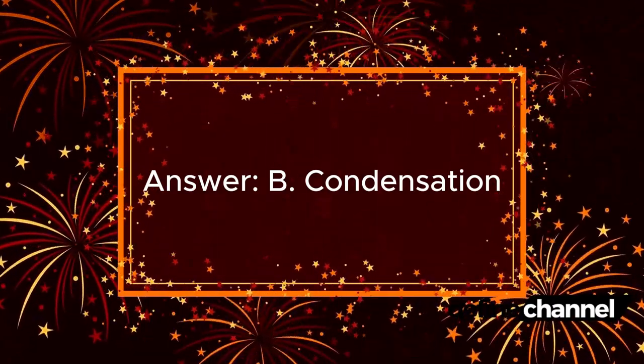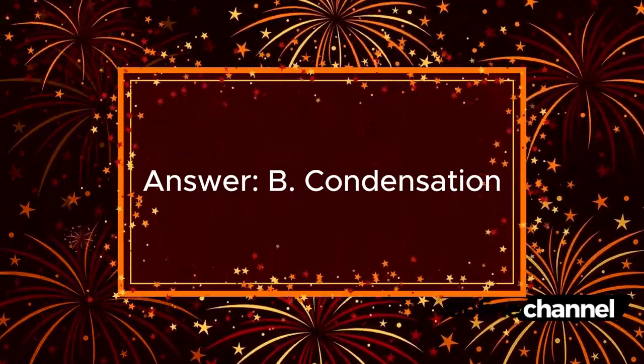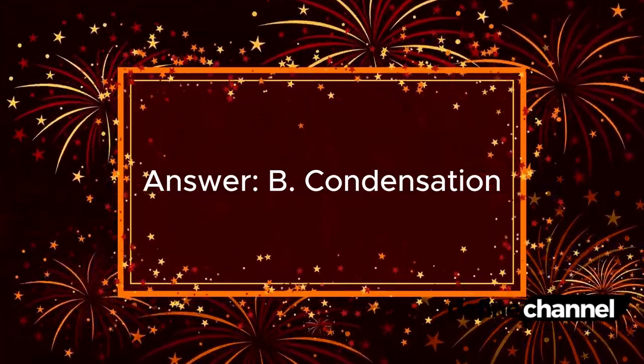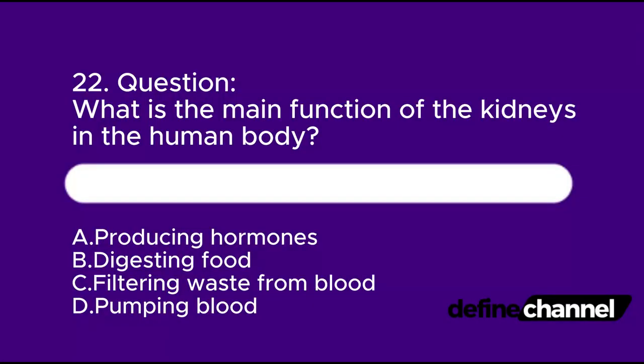Question 22. What is the main function of the kidneys in the human body? A. Producing hormones. B. Digesting food. C. Filtering waste from blood. D. Pumping blood. Which is the correct answer?